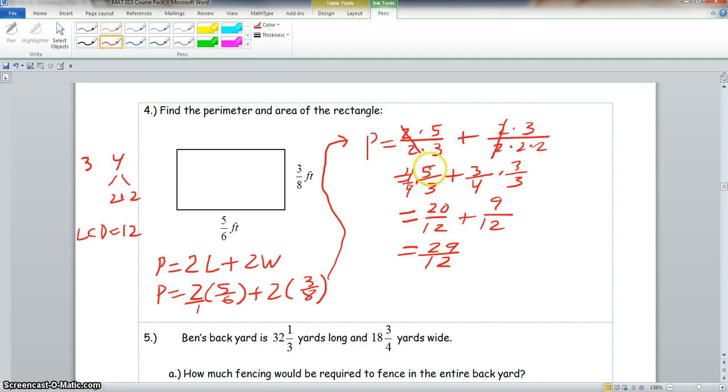Now remember, we want to write this, well we can actually leave this as 29 over 12 feet. Now this is the perimeter. Now we want to do the area. Now remember, area is equal to length times width. So the area is equal to, the length is 5 thirds, and the width is 3 eighths.